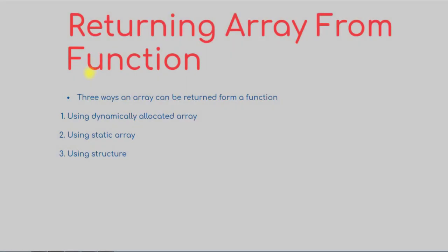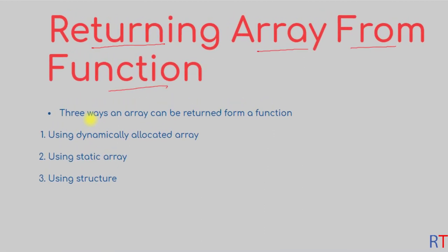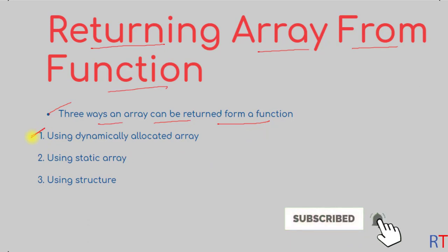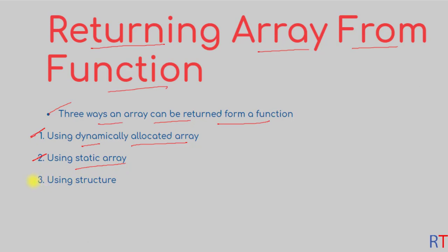In this video we're going to talk about how we can return an array from a function. There are three ways we can do this: we can use a dynamically allocated array, a static array, or the concept of a structure. First we're going to see how we can use the dynamically allocated array to return an array from the function.